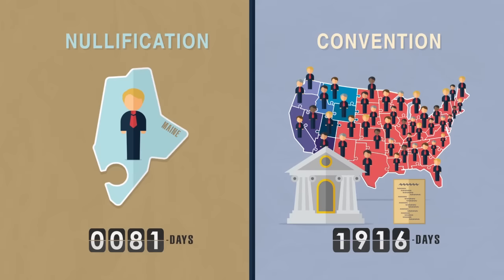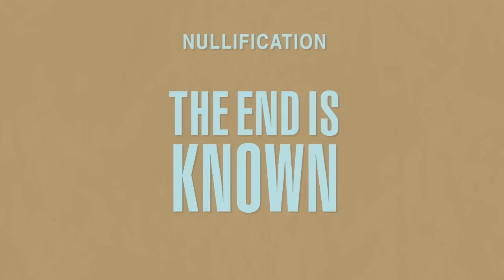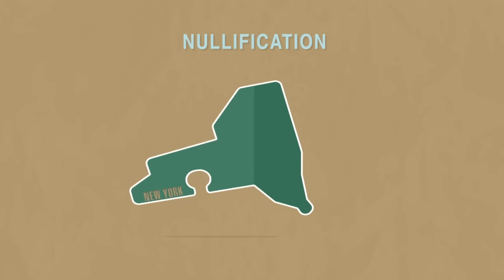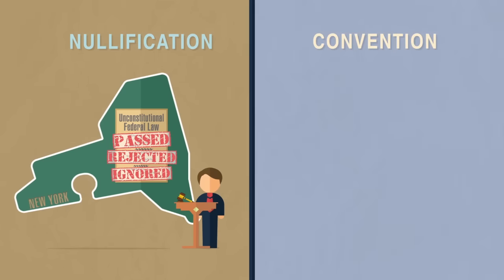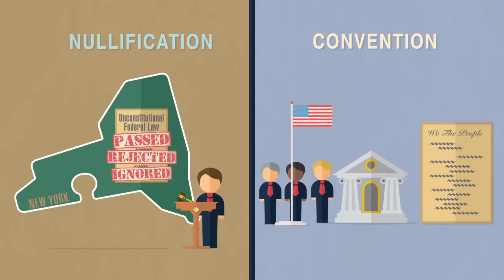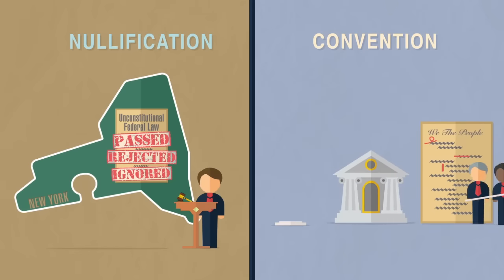As you can see, with nullification the end is known. First, a bill is introduced in a state legislature invalidating an unconstitutional federal law within that state. Next, that bill is passed, rejected, or ignored. With a convention, the end is unknown. Such a convention would have the inherent power to be a runaway convention and completely rewrite the Constitution.